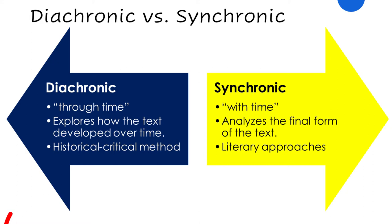Diachronic analysis is the same thing as the historical critical method — they mean the same thing. Synchronic analysis is its opposite. Synchronic analyzes the text exclusively in its final form. It comes from the Greek syn, meaning 'with,' and chronos, meaning 'time,' and it looks at literary approaches — the text insofar as it manifests a narrative character, a persuasive character, or the use of symbols in the literature, among other kinds.